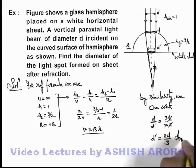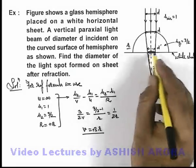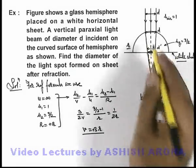That will be the answer to the problem: the diameter of the white spot formed on the white sheet due to the light beam is 2d/3.